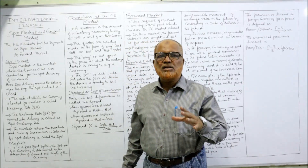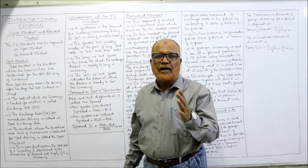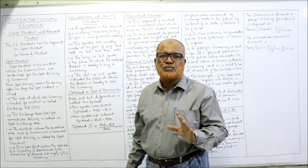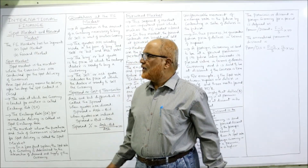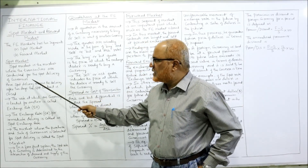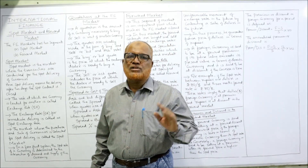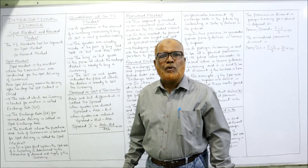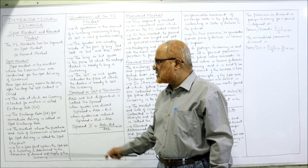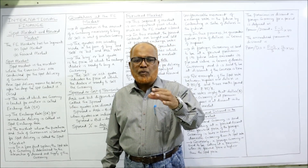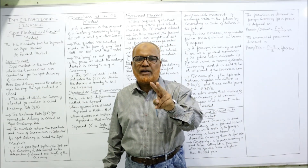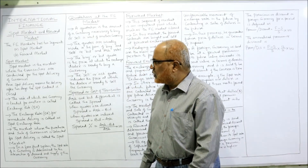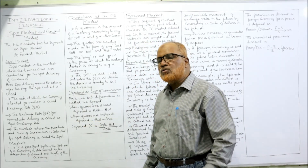First, what is the spot market? The spot market is a market where currencies are exchanged and the contract is completed immediately on the spot, but the transaction will be settled in two days. Spot market is a market where transactions are conducted for the spot delivery of currency. Spot delivery means delivery after two days — the delivery and payment should be completed within two days.